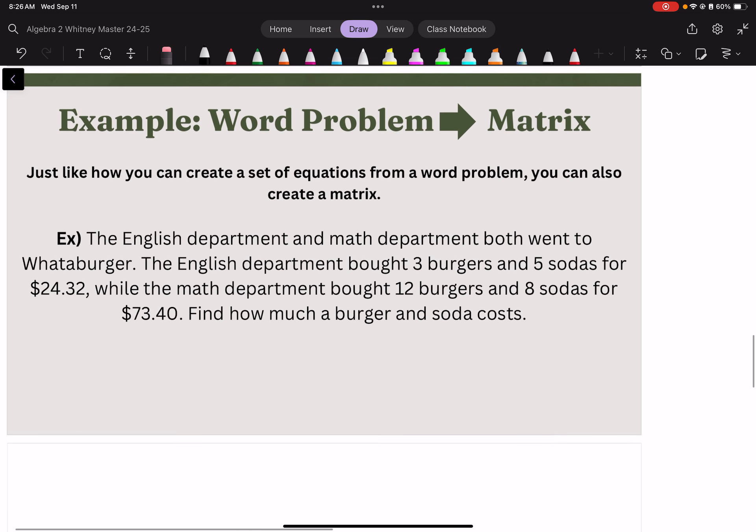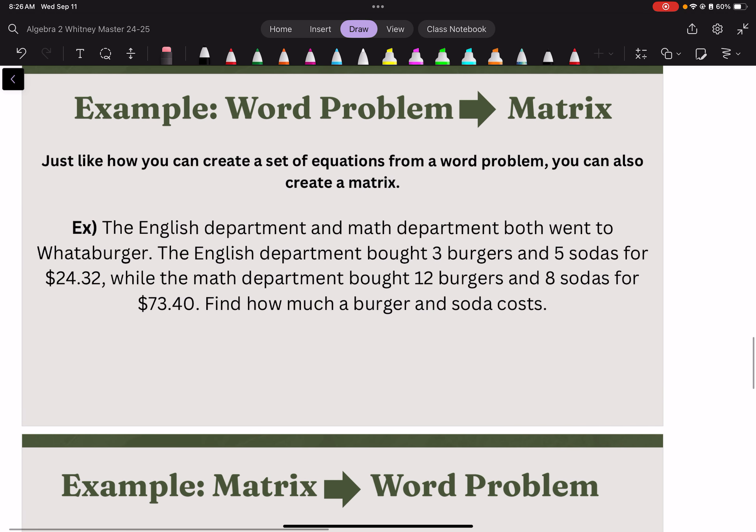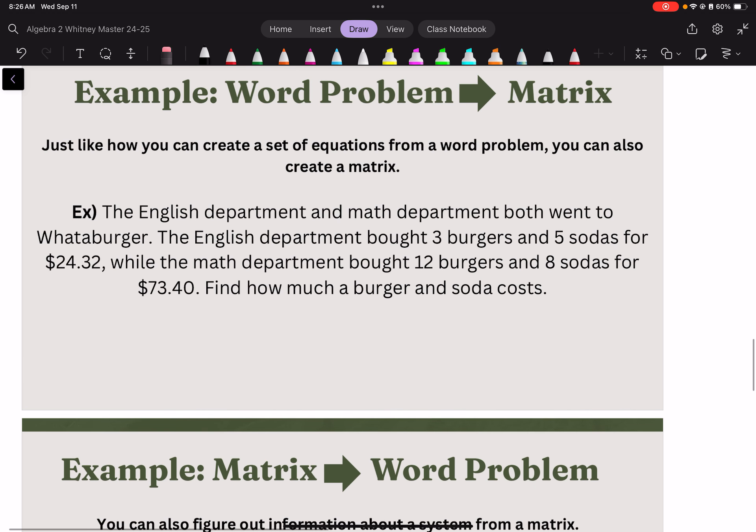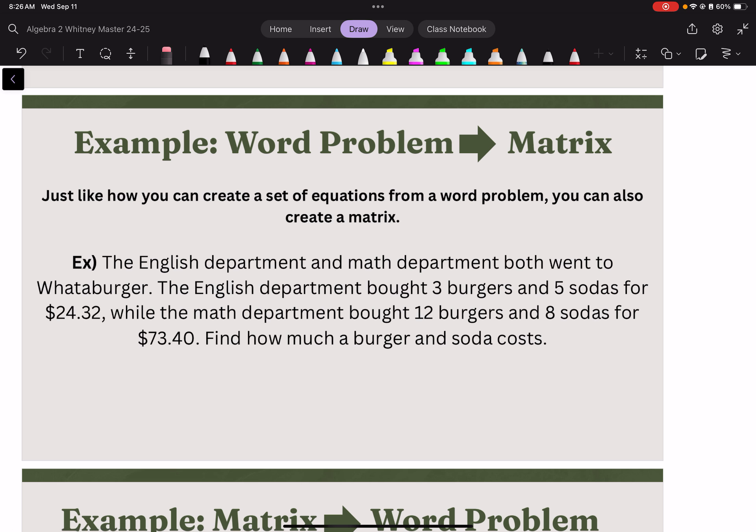We can also go from a word problem to a matrix. So, we can create equations and then make those into a matrix. English department and math department went to Warburger. They bought 3 burgers, 5 sodas for this amount. Math department bought 12 burgers, 8 sodas for this amount. So, we could write it as 3 burgers plus 5 sodas equals 24.32. Whereas, the math department 12 burgers plus 8 sodas equals 73.40.